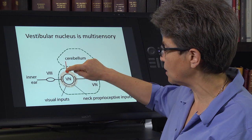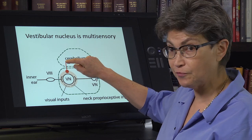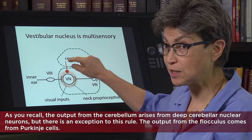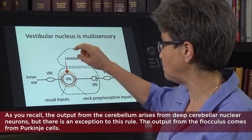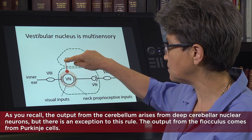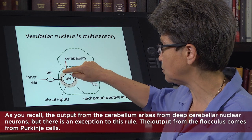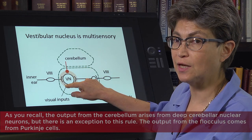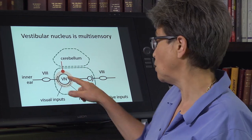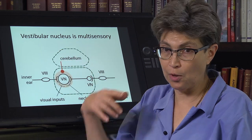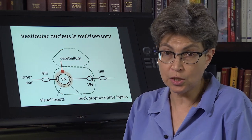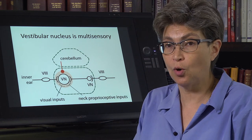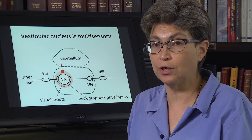The cerebellar input comes from the flocculus — the flocculonodular lobe, the vestibulocerebellum. The flocculus has Purkinje cells that project into the vestibular nucleus and modify the weight of these various synapses. Under one circumstance it may weigh the vestibular inputs by one, and under different circumstances weigh them by 1.5 — giving you a larger VOR when looking at a near target than when looking at a far target.